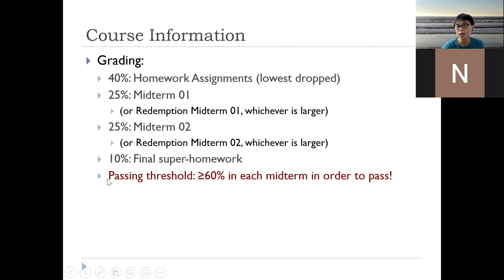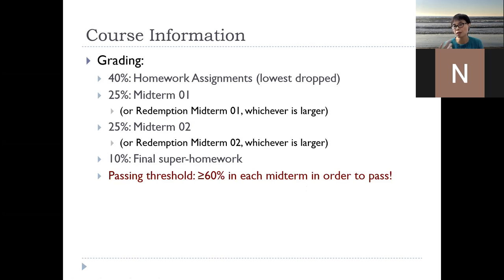One important thing: I want to make sure that you master the material. In order to get a passing grade, you have to score more than 60% on each midterm — this can be your first try or the redemption, whichever is higher. So you have to be higher than 60% on both midterms or their redemptions in order to pass this class. If you have further questions, feel free to ask me later.